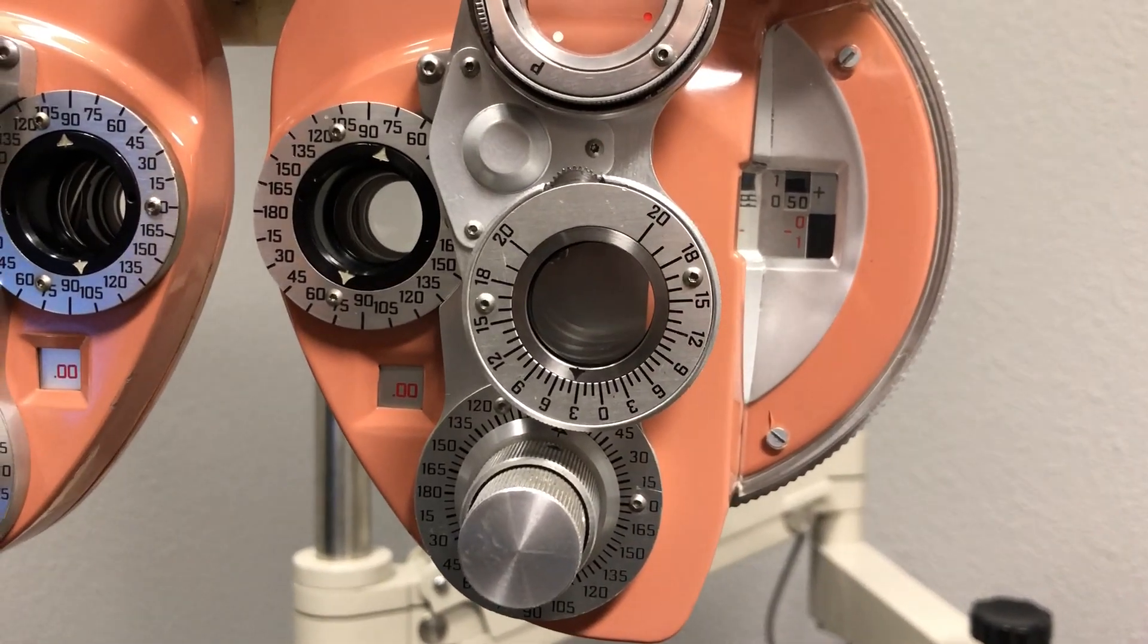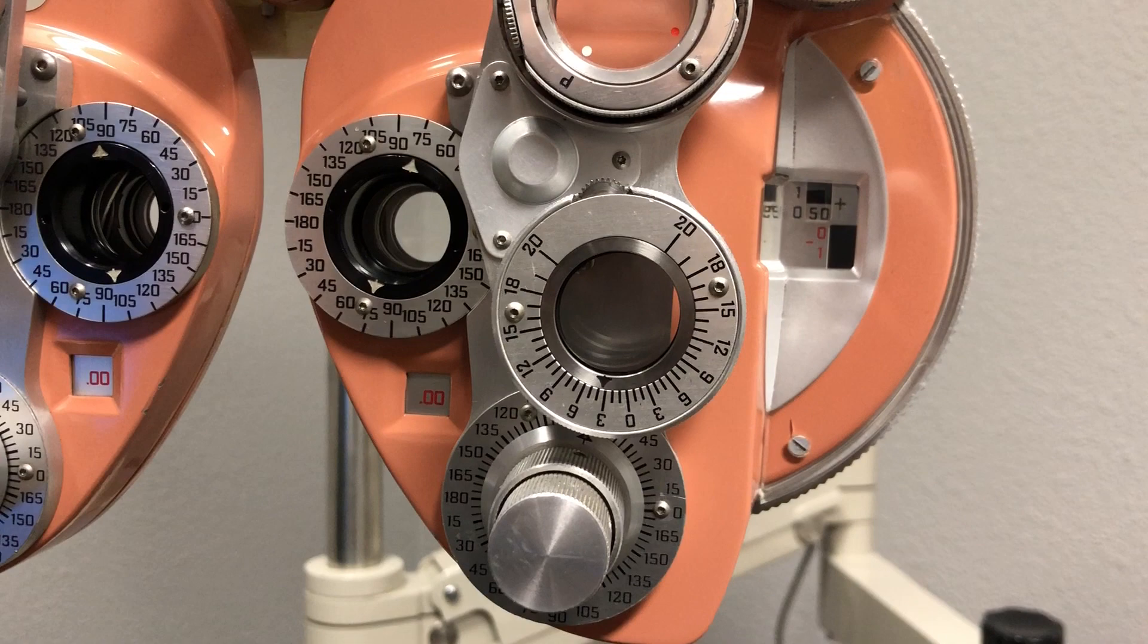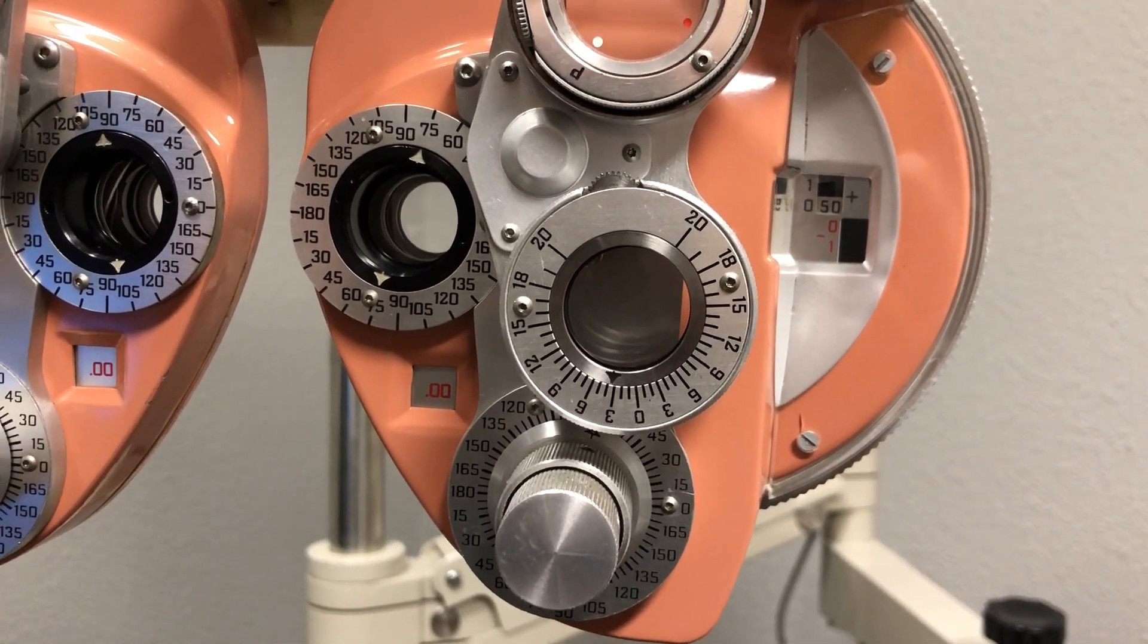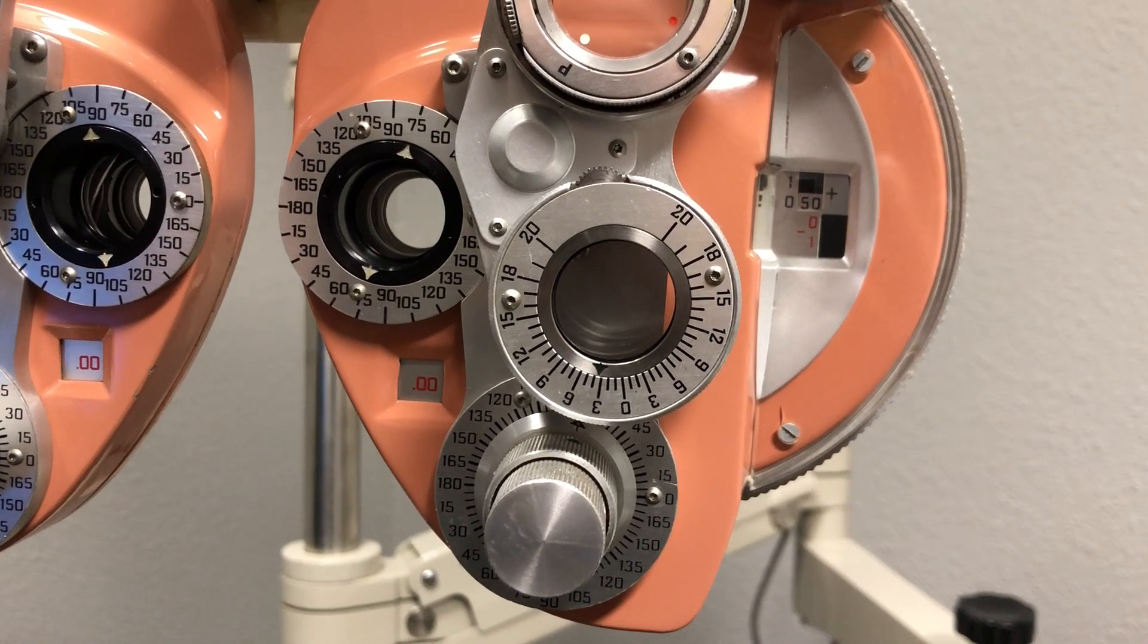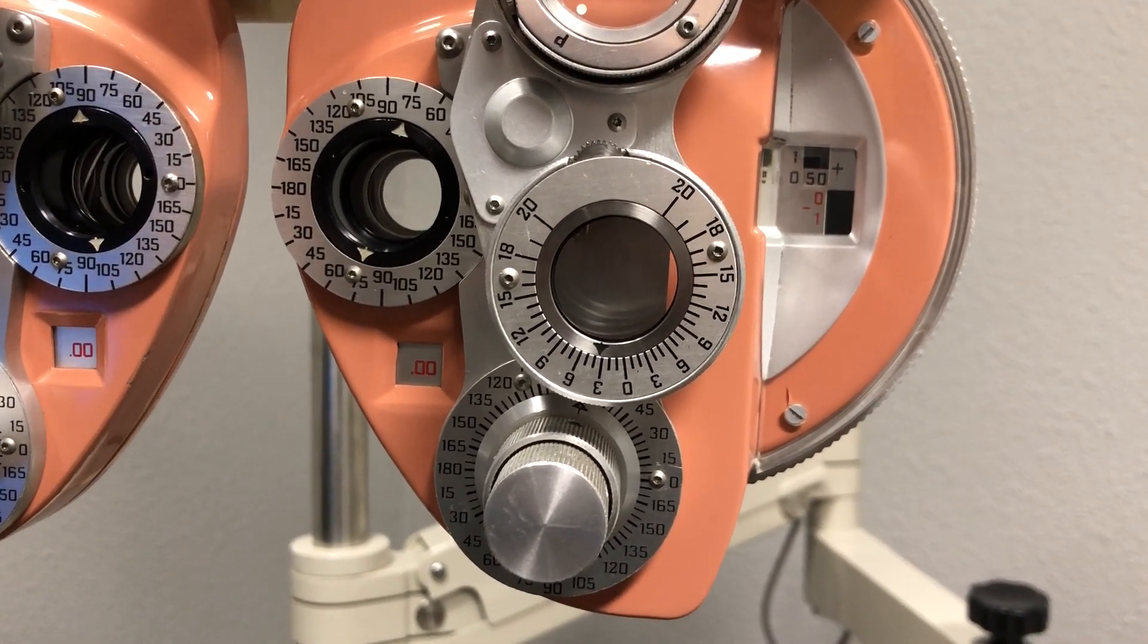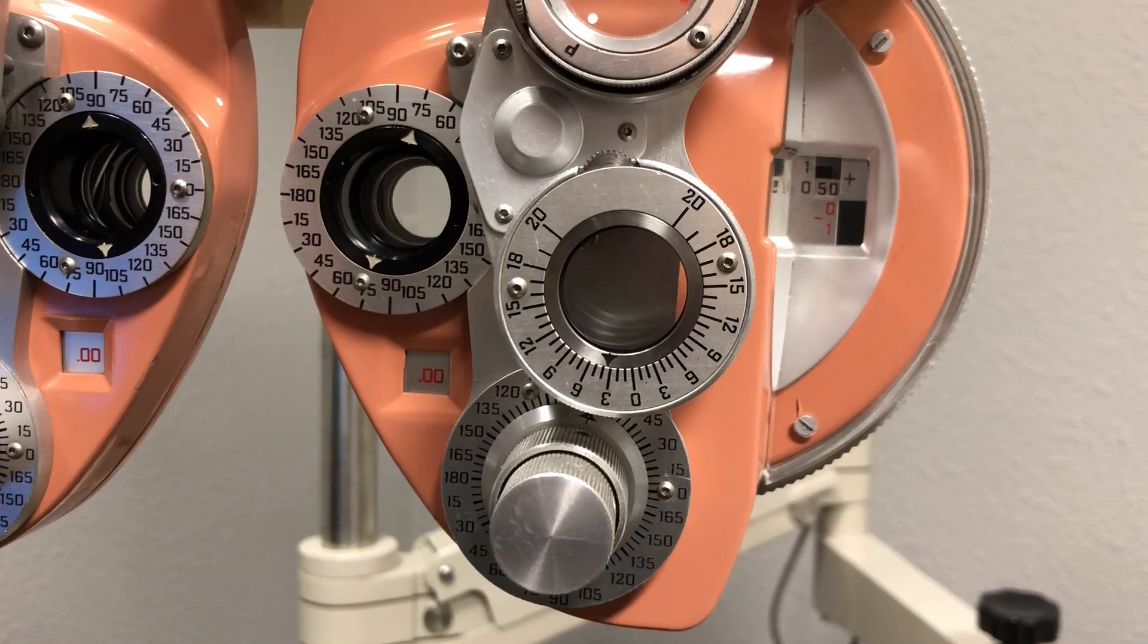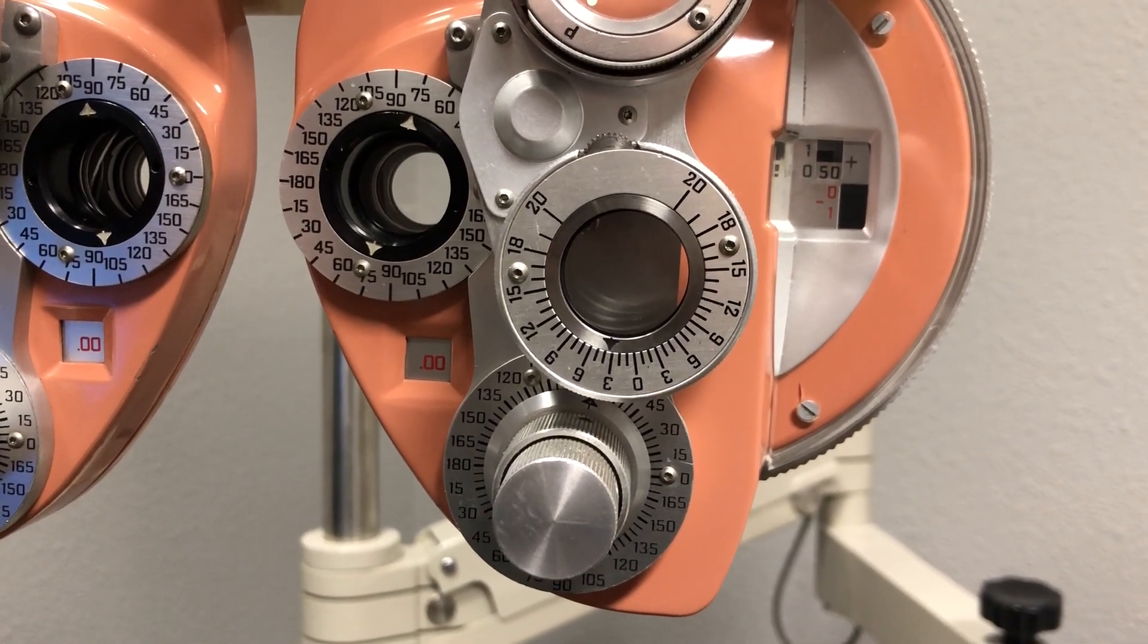Let's look at how cylinder lenses are tested in this phoropter. In the last video, we went over what cylinder lenses look like, and if you rotate them, things will be warped in different directions depending on the axis that you're rotating them in.